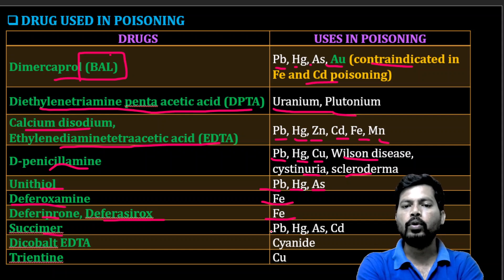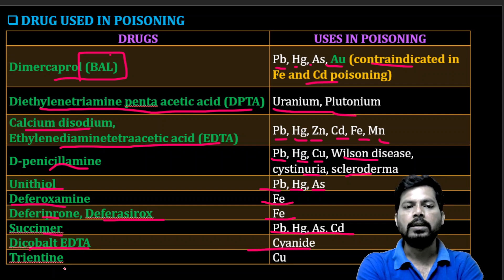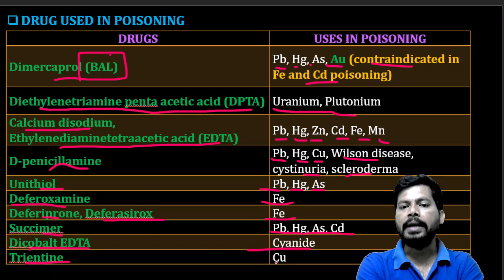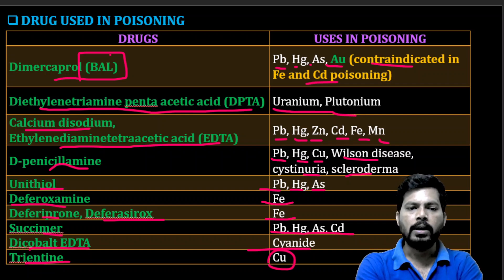Succimer is an antidote for overdose of lead, mercury, arsenic, and cadmium. Dicobalt EDTA is an antidote for cyanide poisoning. Trientine is an antidote for copper poisoning. This is a comprehensive list of drugs used in the treatment of different types of metal poisoning.